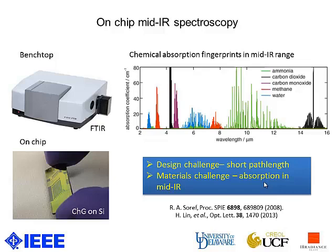However, to date, most chemical spectroscopy demonstrated is based on benchtop instruments like Fourier transform infrared spectroscopy, or FTIR. Thus, we have the motivation to realize chemical spectroscopy on-chip.